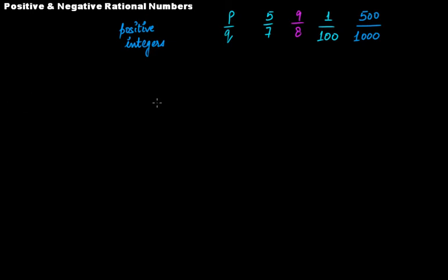A few more examples: 1 over 2 and 3 over 1000. In these two examples, the numerator and the denominator are both positive integers, therefore they are positive rational numbers.